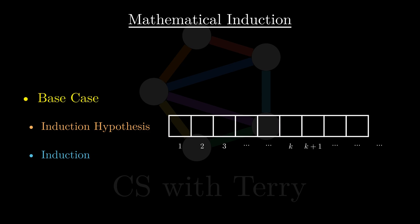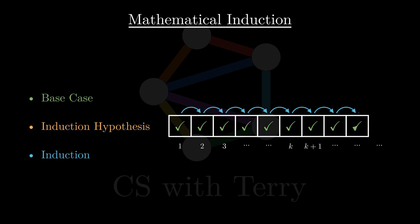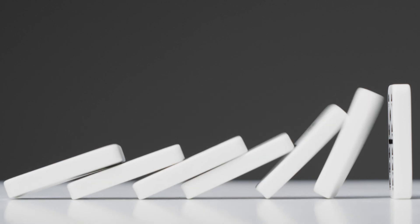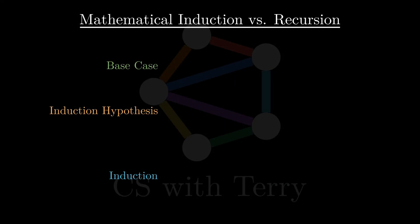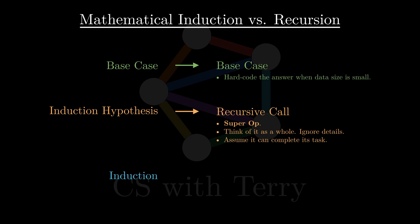For example, for the base case, we need to prove that a certain proposition holds when n is equal to 1. Then, for the induction hypothesis, we assume that this proposition is also true when n is equal to k. Finally, in the induction step, we need to prove from the induction hypothesis that this proposition is also true when n is equal to k plus 1. If these three steps are satisfied, we can prove that the proposition is true for any positive integer — just like dominoes, if the first domino falls, the others will follow. The base case in mathematical induction corresponds to base case processing; both deal with small data sizes. Induction hypothesis corresponds to recursive calls; both assume subproblems can be solved correctly. Induction corresponds to constructing the final result; both derive the solution to the larger original problem from solutions to the subproblems.